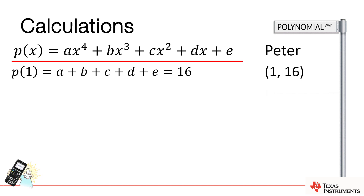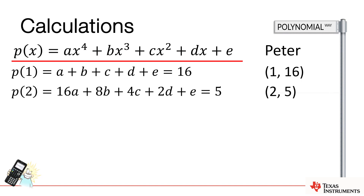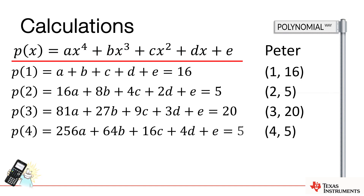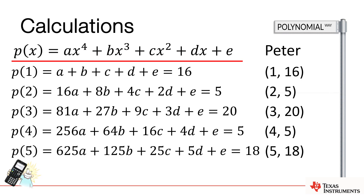My second point passes through (2, 5), so I need to do p(2) — substitute 2 in for x. 2 to the power of 4 is 16, 2 cubed is 8, 2 squared is 4, so my equation looks like 16a + 8b + ... and so on. Then p(3) gives me the equation for (3, 20), p(4) gives me that one, and finally p(5) gives me the last one.